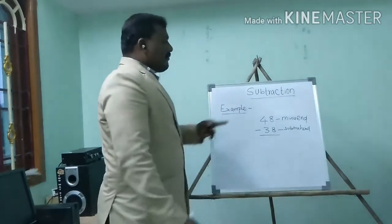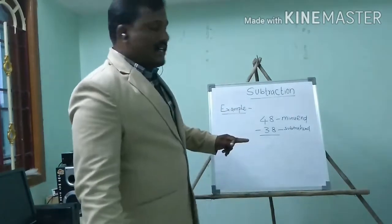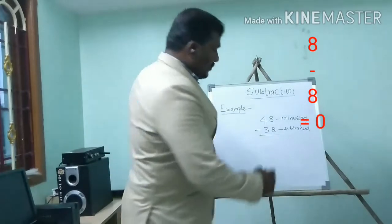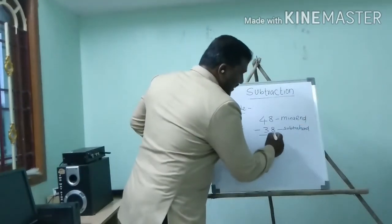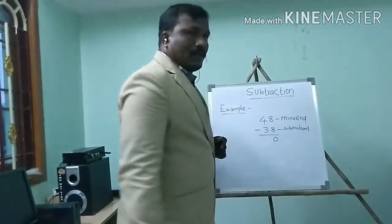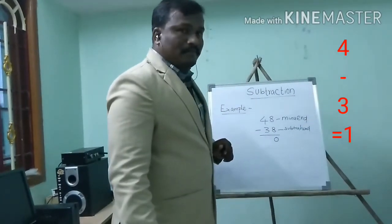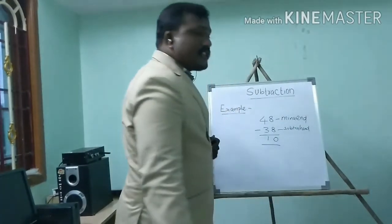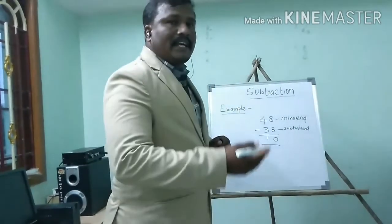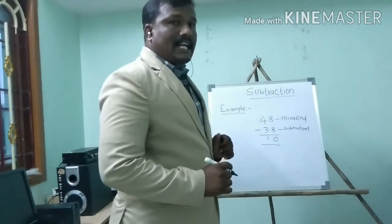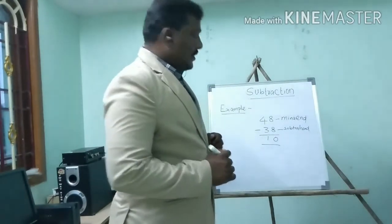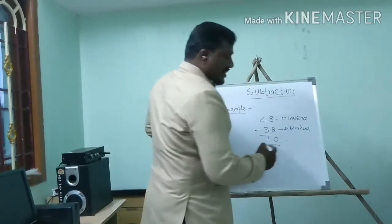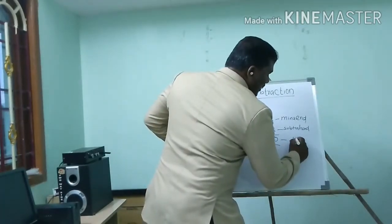Now we will find out the answer. So 8 minus 8 is 0. 4 minus 3 is 1. So how many pens remain left with me? 10 pens are left with me. This is the answer.